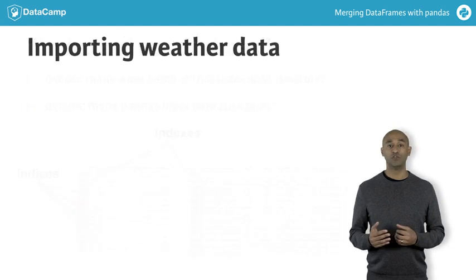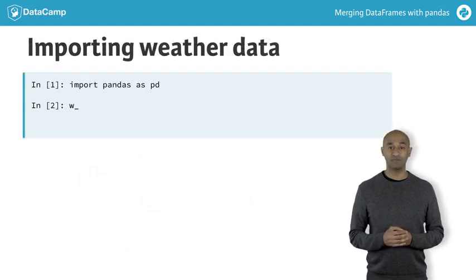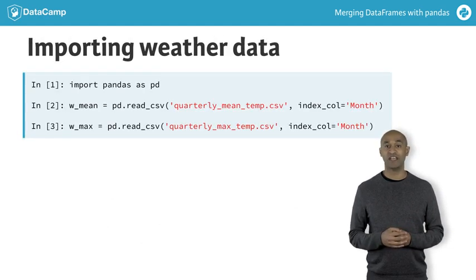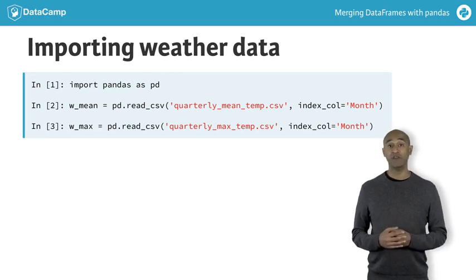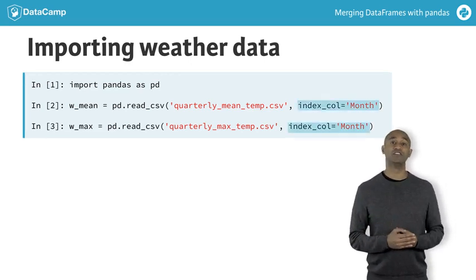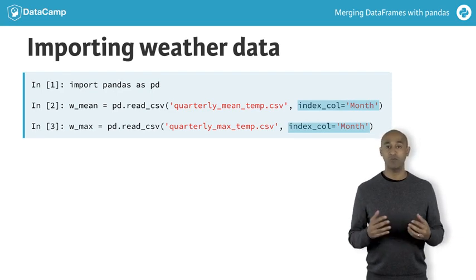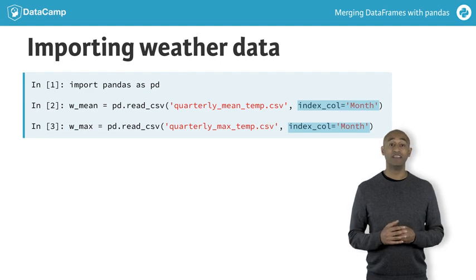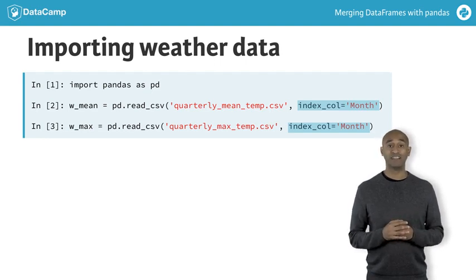To start, let's load two data frames of temperature data recorded from Pittsburgh in 2013. For both calls to read_csv, we use the index_col argument to specify which column becomes the data frame index — month in both cases. Remember, the index is a privileged column in pandas, providing convenient access to Series or data frame rows.